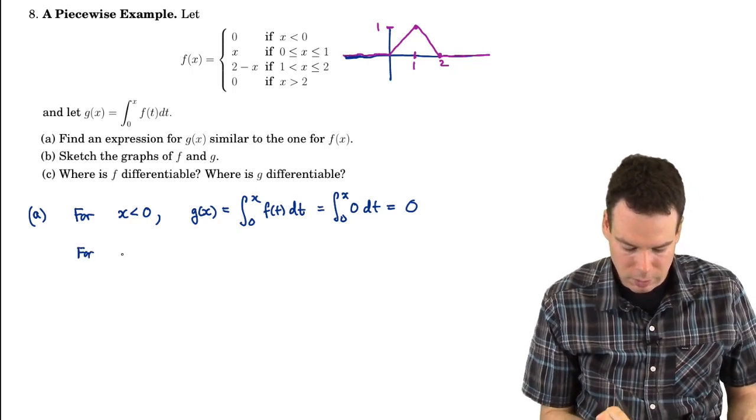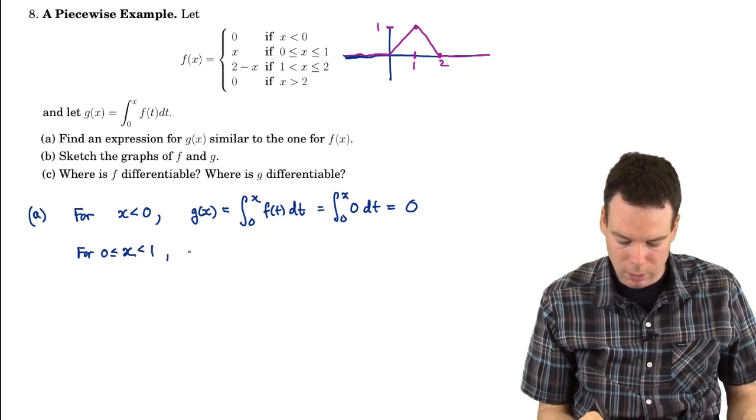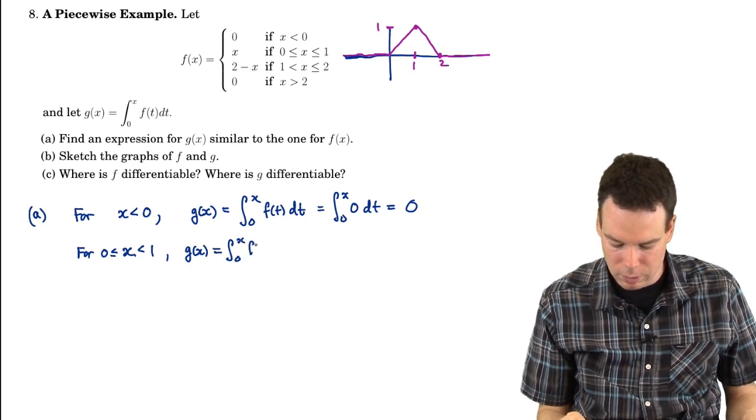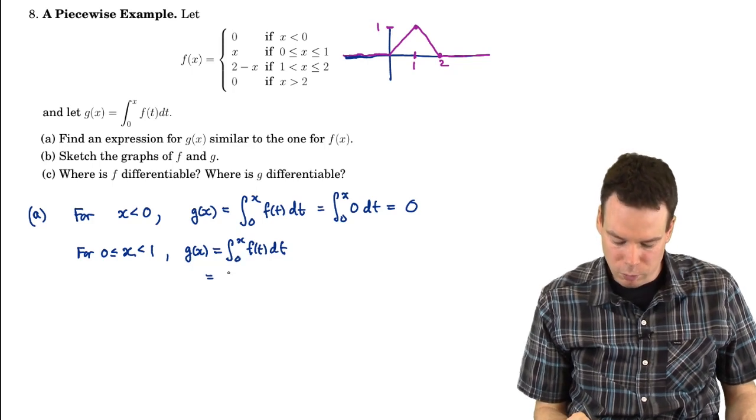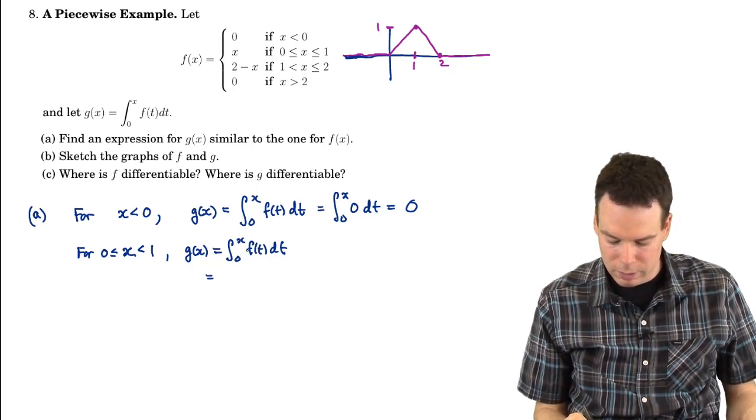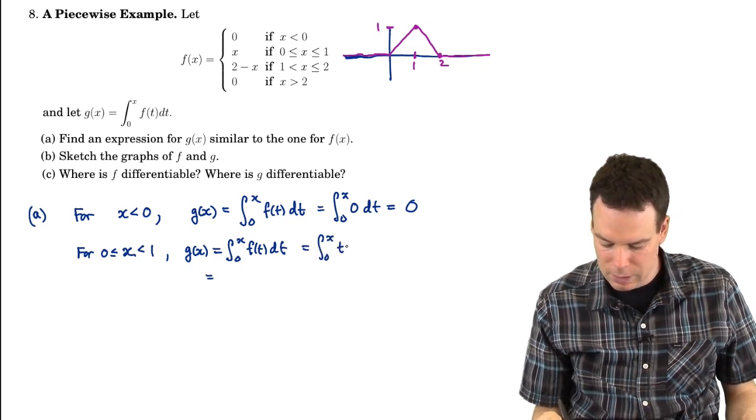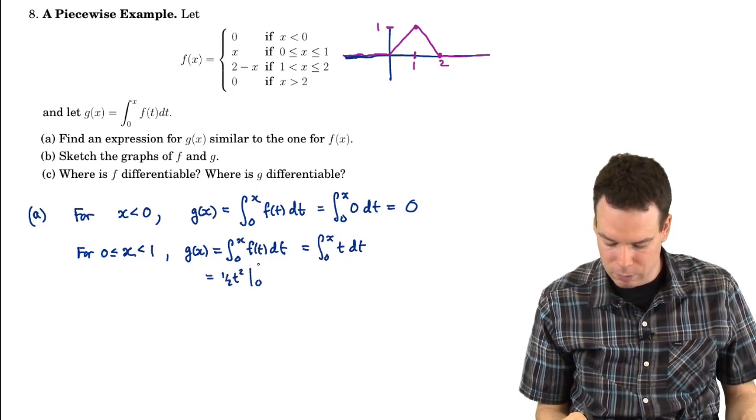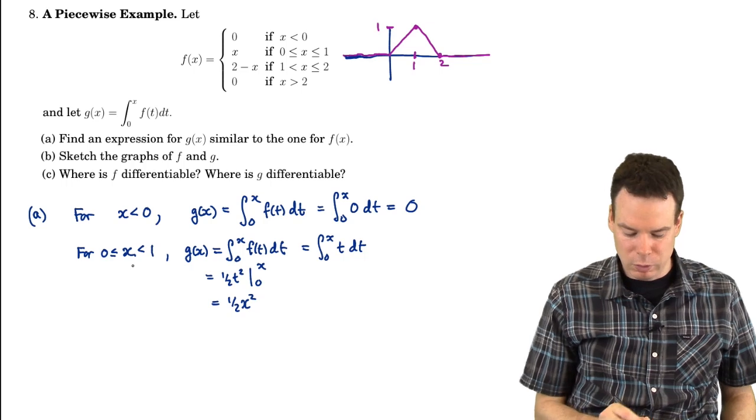What about for x between 0 and 1? Well, here G of x, we're looking at is the integral from 0 to x of F of t dt. When x is between 0 and 1, this interval from 0 to x, the function F is given by just x itself. So this is the integral from 0 to x of t dt. The integral would then be 1/2 t squared from 0 to x, or in other words, 1/2 x squared. So there's the description of G for x values between 0 and 1.